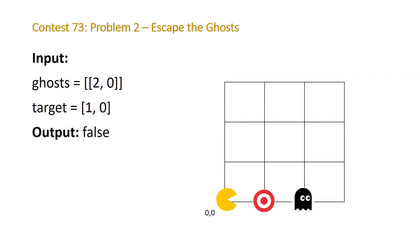In another example, here we only have one ghost, and we're equidistant away from our target. And after one move, Pac-Man and the ghosts are going to reach the target at the same time. But as the problem stated, if this happens, it doesn't count as an escape.